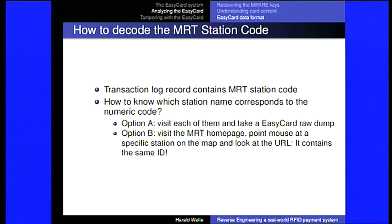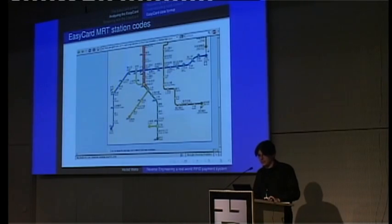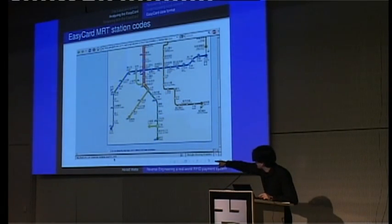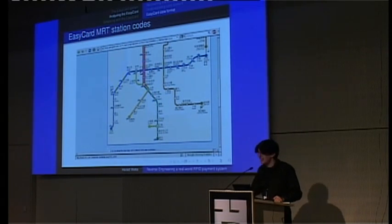I was a bit surprised to see UNIX timestamps since in Taiwan the calendar starts in 1911 — right now it's year 99 — but they still use UNIX timestamps here, probably not enough political influence on the manufacturer. For the MRT station code, you could visit every station and manually build a mapping, but a much easier approach is to go to the MRT homepage, hover your mouse over a station name, and the last three digits in the URL are the station code — in decimal, so you still need to convert to hex.